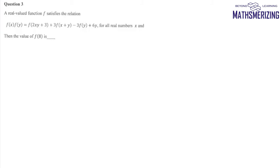Question number three is a functional equation represented by the relation f(x)·f(y) = f(2xy + 3) + f(x + y) - 3f(y) + 6y for all real numbers x and y. We need to find the value of f(8).